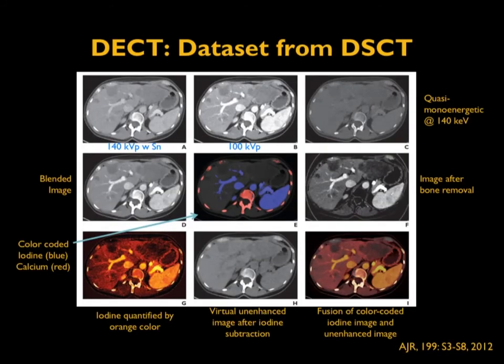Here is one representation of the data sets from dual energy CT using a dual source CT scanner. The top panel shows acquisition images at 140 kV and the second panel shows 100 kV. With these two energy sets, one can create quasi mono-energetic images at any energy between 40 and 140 keV. You can also create a blended image, a color-coded image showing iodine in blue and calcium in red, and images after bone removal.